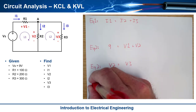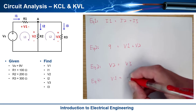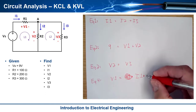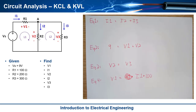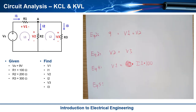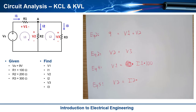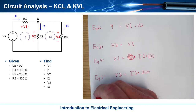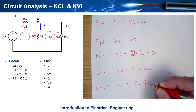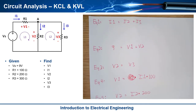The next three equations are Ohm's Law for each resistor. Equation 4: V1 = I1 × 100. Equation 5: V2 = I2 × 200. Equation 6: V3 = I3 × 300. Now I have all six equations needed to solve the six unknowns.